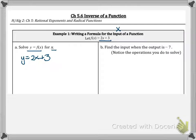Now we're going to solve for x. So let's subtract 3. So y minus 3 equals 2x divided by 2. So now x equals y minus 3 over 2.